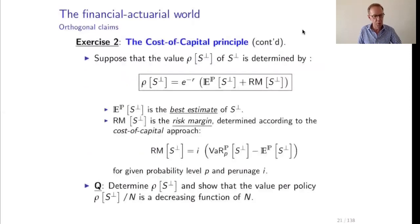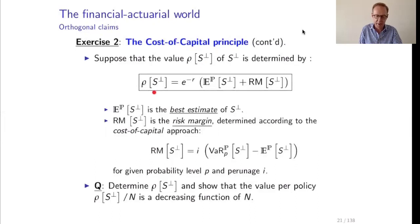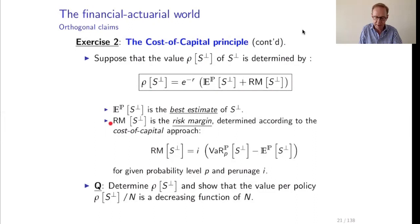The insurance portfolio liability related to claims X_1 to X_N is simply S-orthogonal equals the sum from i=1 to N of X_i. Now let us introduce the cost of capital principle. We want to value rho of S-orthogonal as follows: rho of S-orthogonal equals e to the power minus r times the expectation under P of S-orthogonal, plus a risk margin. The expectation under P of S-orthogonal is the best estimate, and the risk margin is determined according to the cost of capital principle.